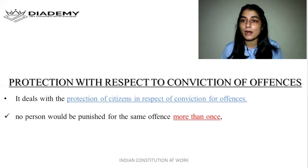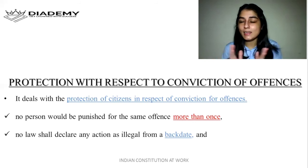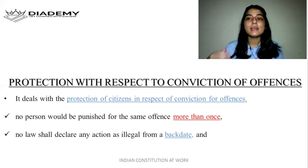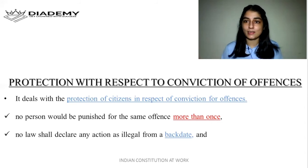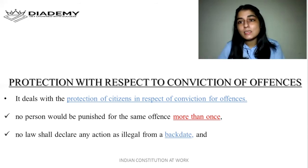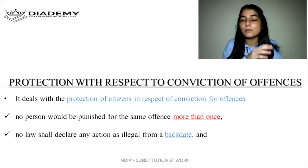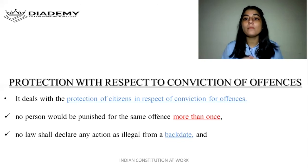Next is no ex post facto legislation — no law shall declare any action as illegal from a back date. For example, if stealing is not illegal today and you steal today, but next year stealing is made an illegal offense — since stealing was not an offense when you did it, you cannot be punished for it. Only from the time the law is made can a person be punished. This is called no ex post facto legislation.